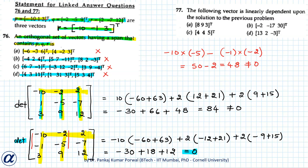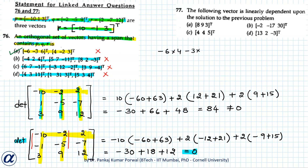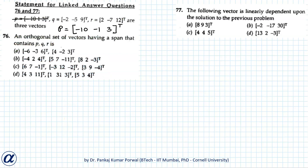With rank 2, option A becomes correct. We verify orthogonality of the two vectors in option A by computing their dot product: (−6)(4) + (−3)(−2) + (6)(3) = −24 + 6 + 18 = 0. The dot product is zero, confirming the two vectors in option A are orthogonal to each other.